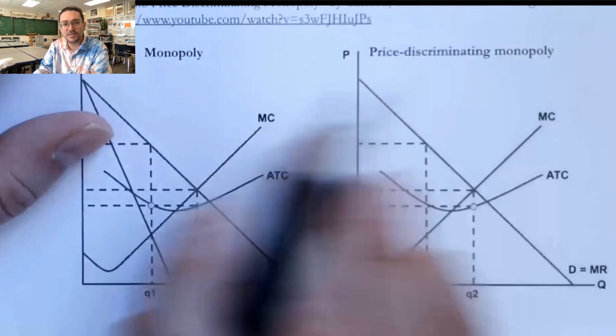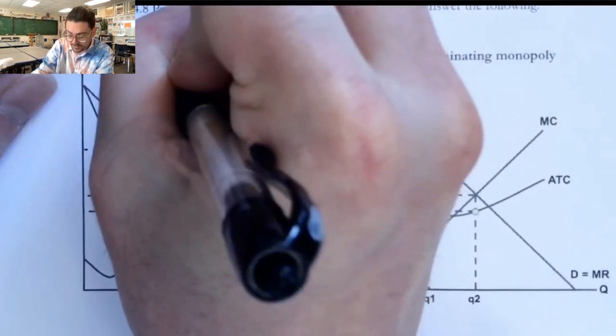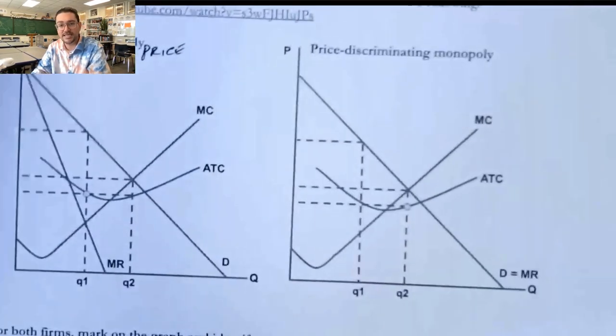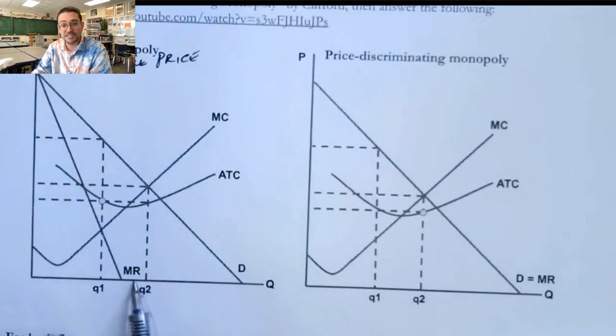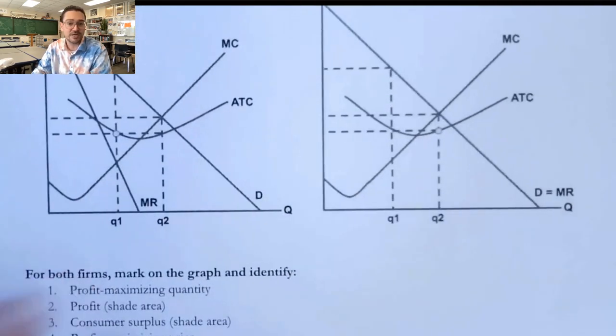What we're going to do is compare the difference between a single price monopolist and a price discriminating monopolist. What I've shown you here is really the only difference is that the marginal revenue curve becomes part of the demand curve for a price discriminating monopoly.